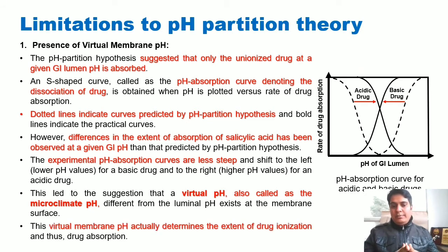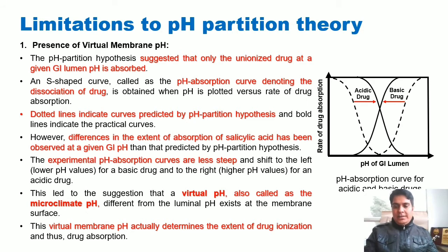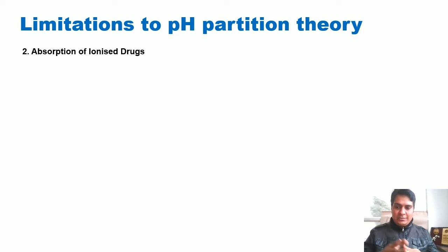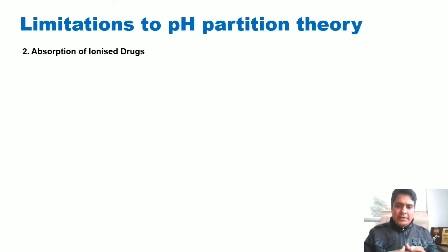This virtual pH is different from the luminal pH that exists exactly on the membrane surface. This virtual membrane pH actually determines the extent of drug ionization and thus drug absorption. The next limitation is the absorption of ionized drug — it does happen, and there are many mechanisms that ensure ionized drugs are also absorbed, though the extent of absorption by this process is quite low compared to the unionized drug.